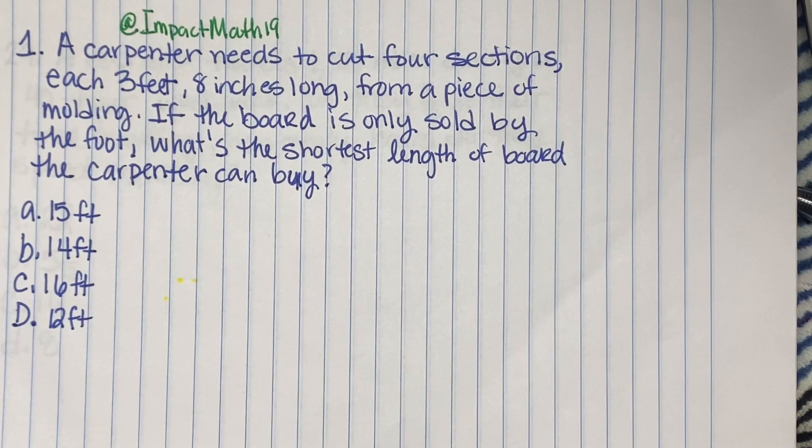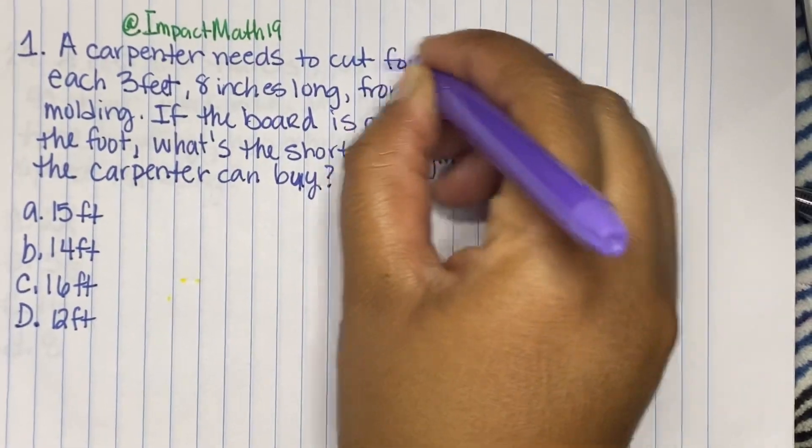So it says a carpenter needs to cut four sections, each three feet, eight inches long, from a piece of molding. This is the key right here.